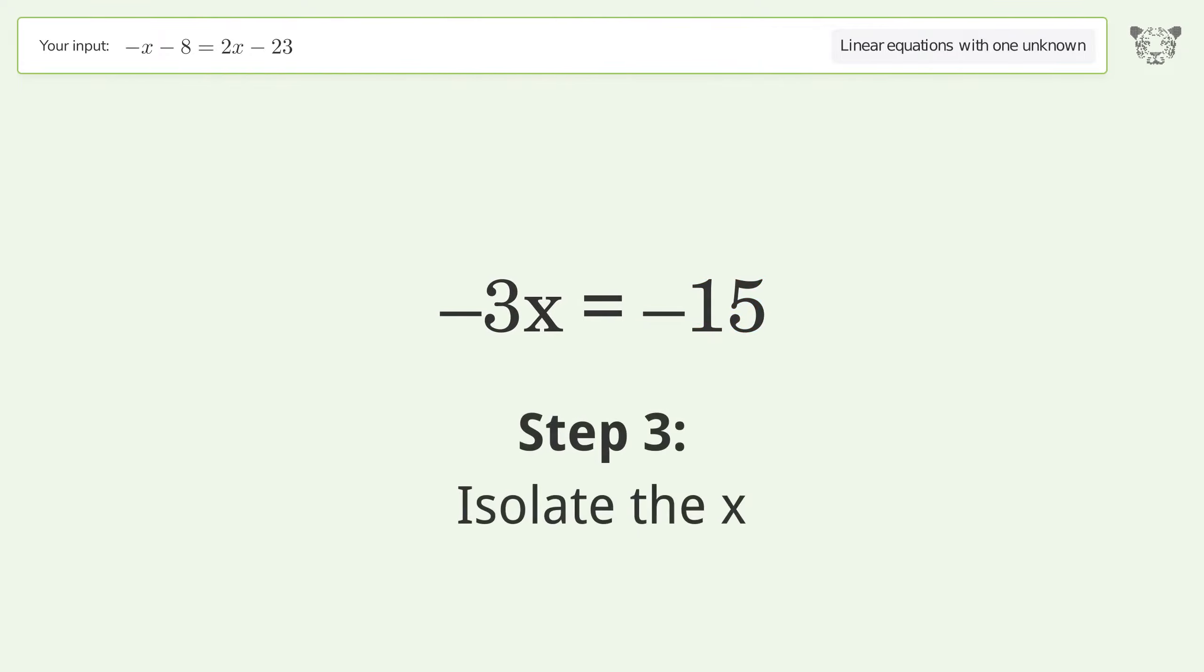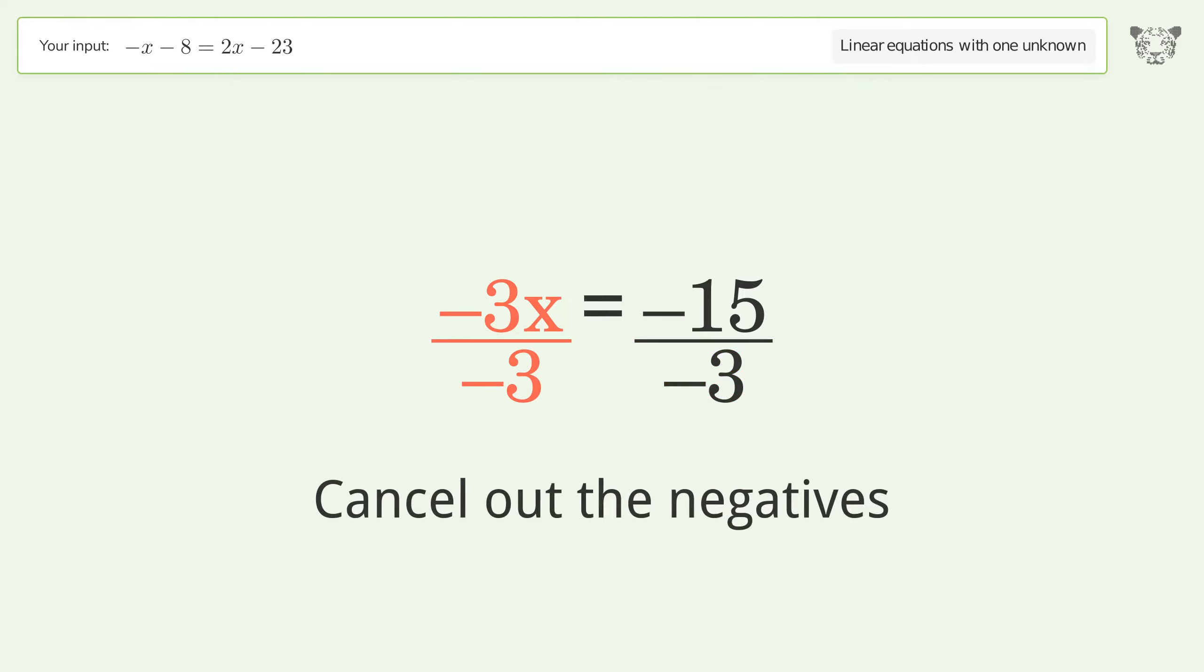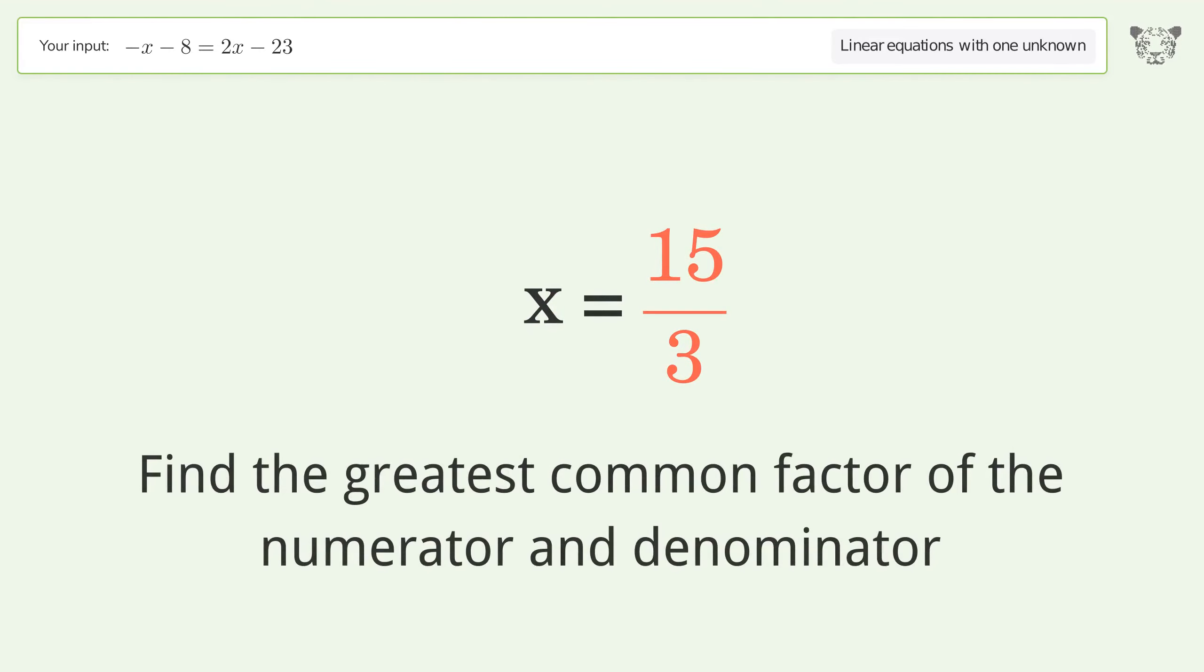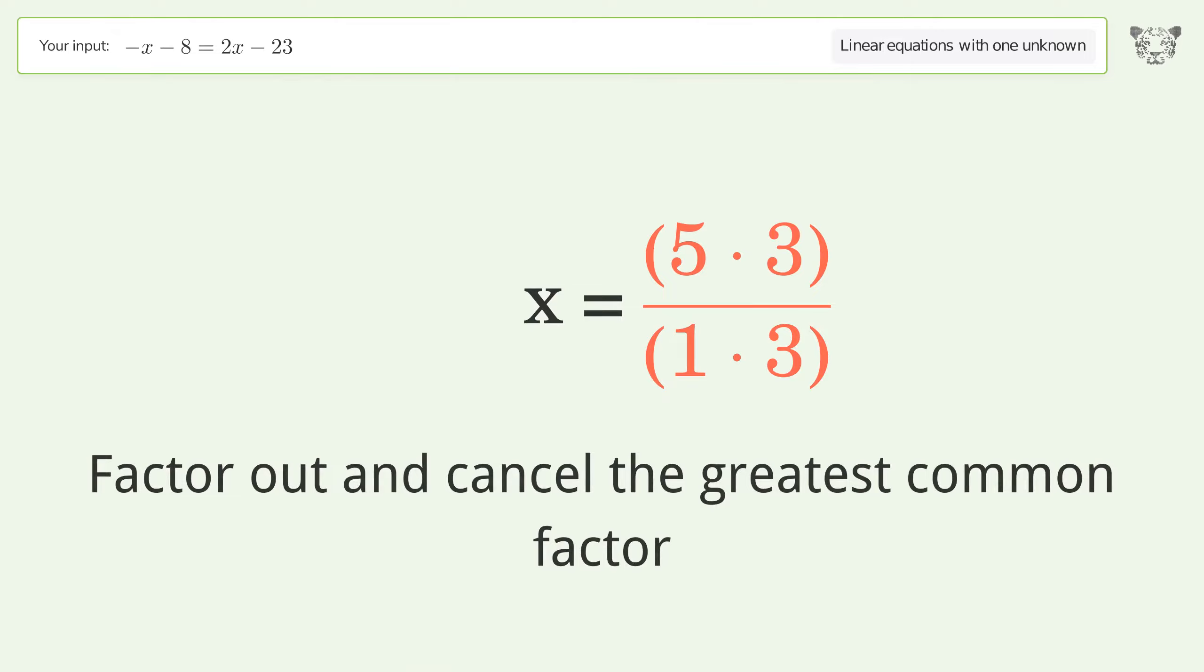Isolate the x. Divide both sides by negative 3. Cancel out the negatives. Simplify the fraction. Cancel out the negatives. Find the greatest common factor of the numerator and denominator. Factor out and cancel the greatest common factor.